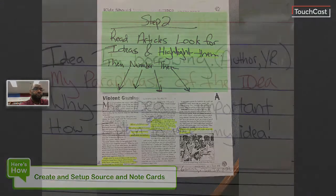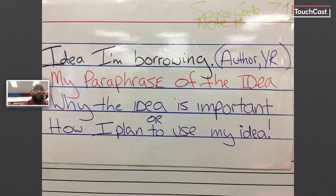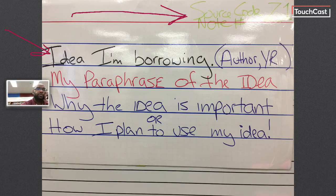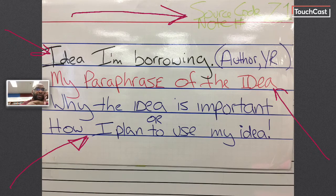I forgot to show you what a completed index card should look like. For the setup: your completed note card will have its source code letter, you're gonna have the idea you're borrowing first, you're gonna have your paraphrase of the idea — and this is the most important part — without this you don't have a note card: you're gonna explain why the idea is important, or how you plan to use the idea in your paper, and what does this idea prove.